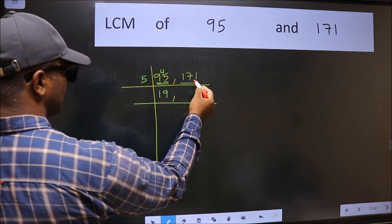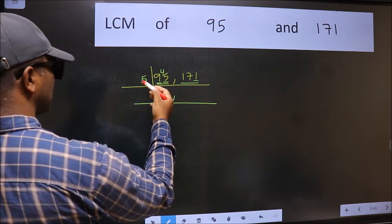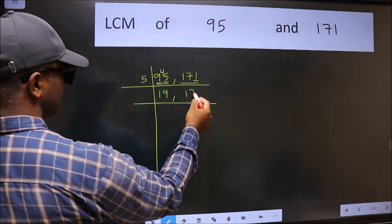The other number 171, last digit neither 0 nor 5. So this number is not divisible by 5, so you write it down as it is.